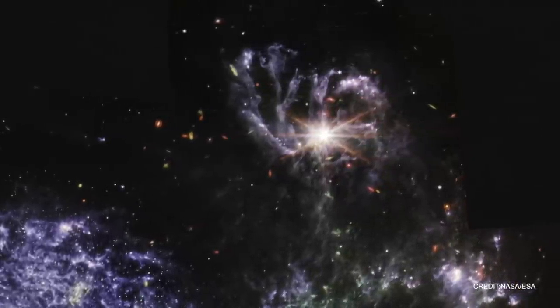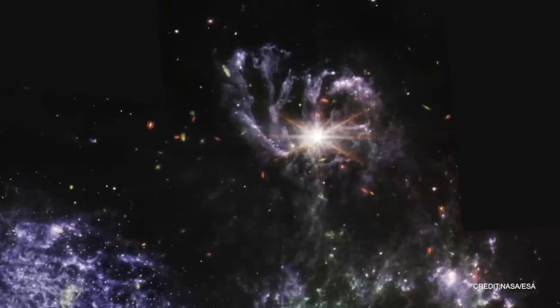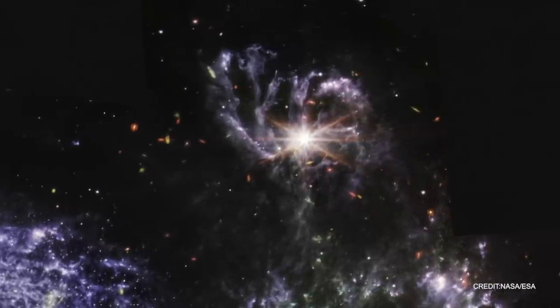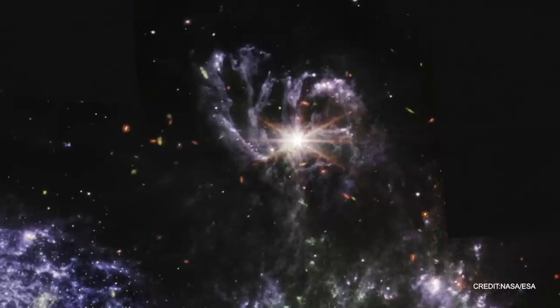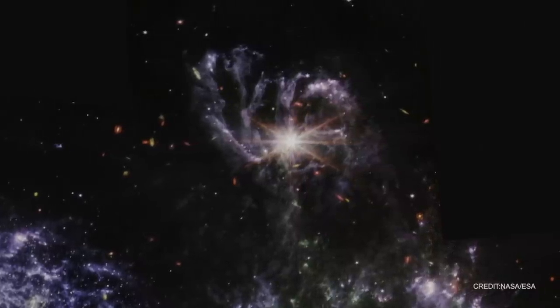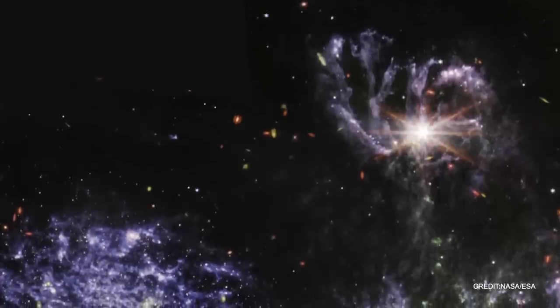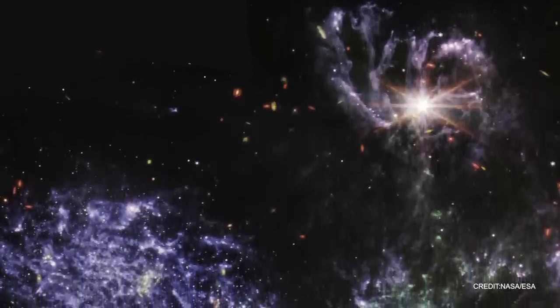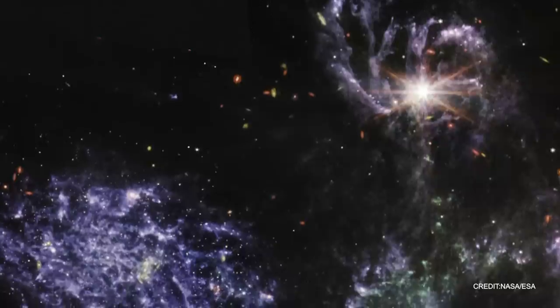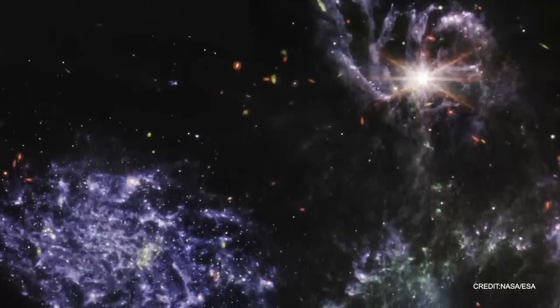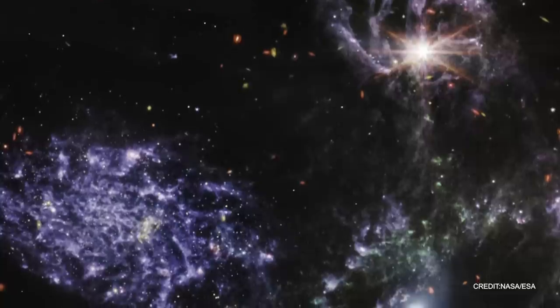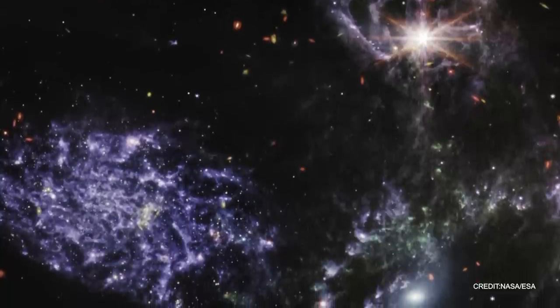The showstopper within Stefan's Quintet is NGC 7319, the topmost galaxy. Nestled within it is a supermassive black hole, weighing in at a colossal 24 million times the mass of our sun. It is active, consuming material and emitting light energy equating to 40 billion suns. MIRI's sharp vision penetrates the dust surrounding this black hole, revealing the remarkably bright active galactic nucleus.